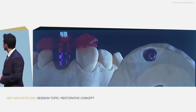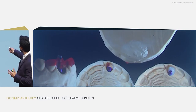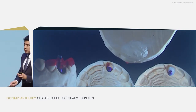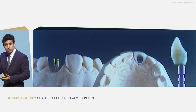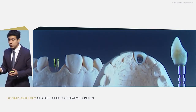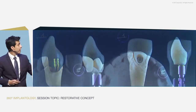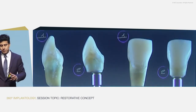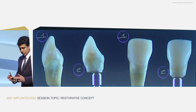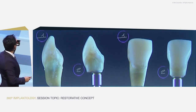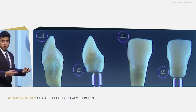We stabilize the implant with some stone at the bottom and flowable composite on top. We take the natural crown, cut it, and place it on top of the provisional abutment. Now comparing figure one and figure two — number two is the same tooth but on top of the provisional abutment.